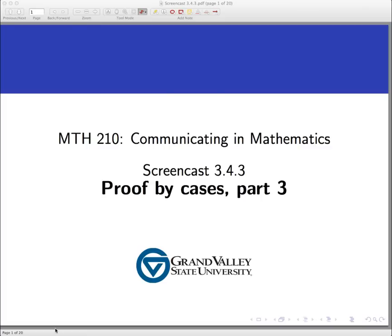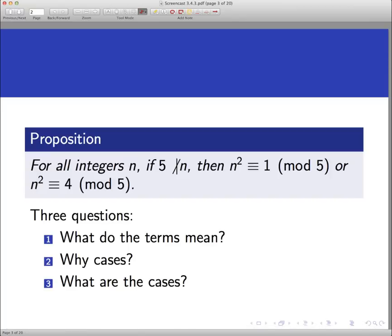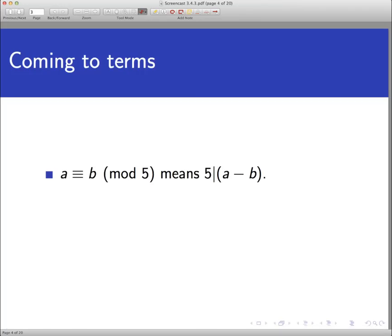Welcome back to another example of proof by cases. The proposition this time looks a little strange, so let's think about it. For all integers n, if 5 does not divide n, then either n squared is congruent to 1 mod 5, or n squared is congruent to 4 mod 5. Before we can prove something, we need to address three questions: what do the terms mean, why should we use cases, and what are the cases?